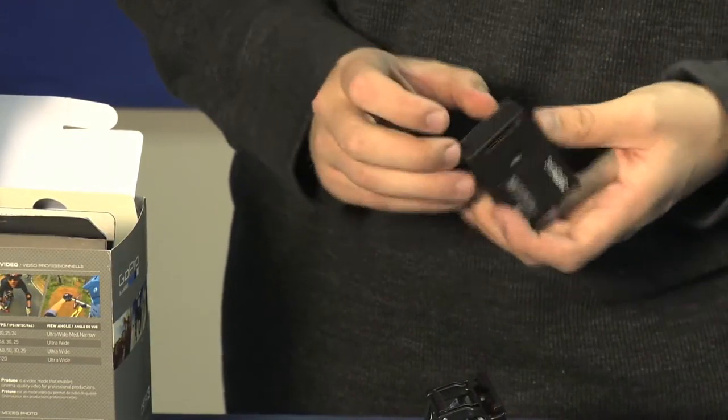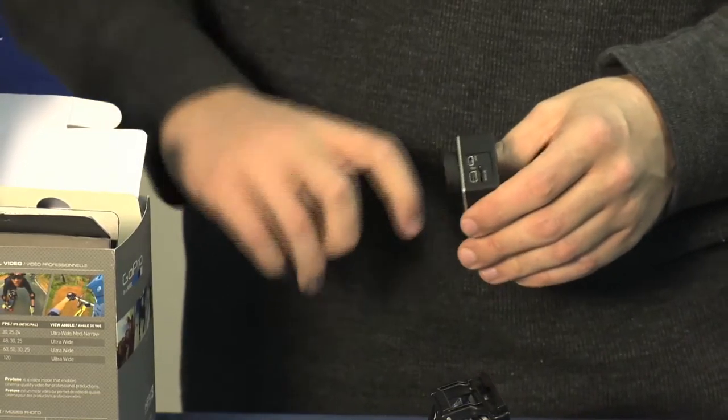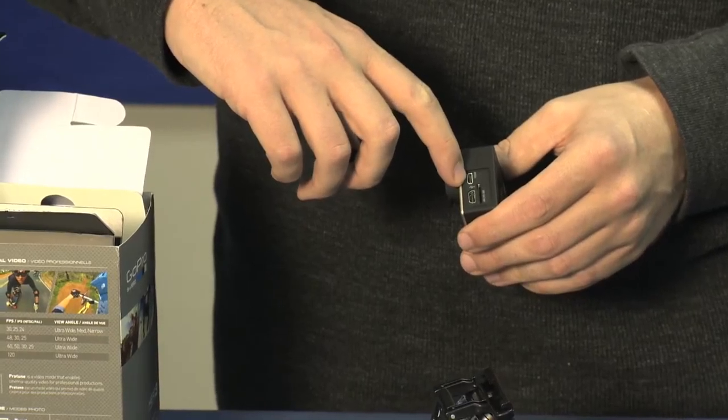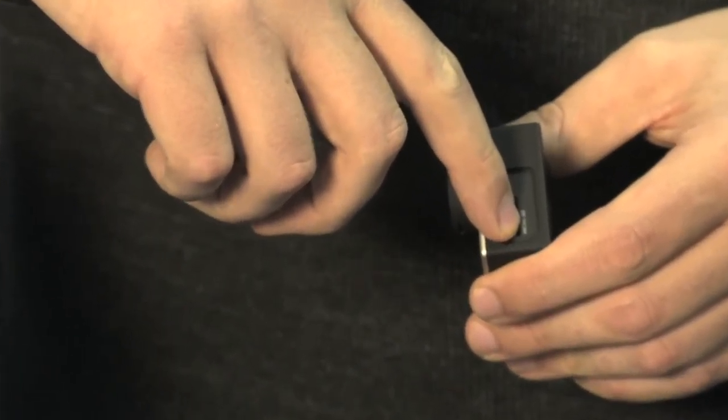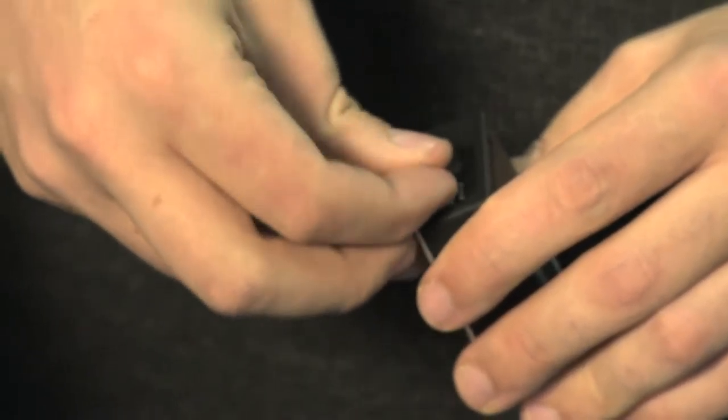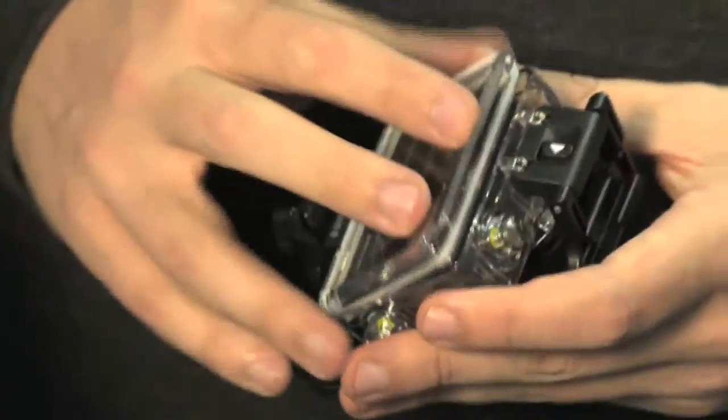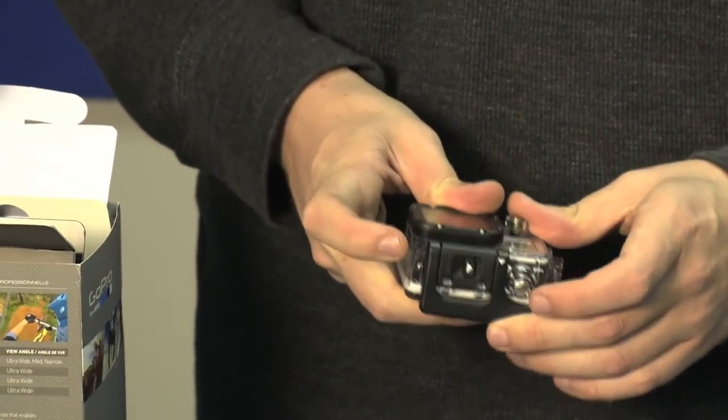While we've got it out of the case here, on the side under this little rubber cover, you've got your USB and HDMI ports as well as your microSD slot. It'll take up to a 32 gigabyte microSD card, which will provide you with many hours of recording on a large microSD card. It just drops right back into the housing and then you just click it back closed like that.